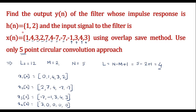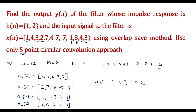Now we rewrite h[n] so that its length equals 5 by adding L-1 zeros. We have h[n] = {1, 2}, and since L equals 4 we add 3 zeros, giving h[n] = {1, 2, 0, 0, 0}. Now we perform 5-point circular convolution between each sub-block and h[n]: x1[n] with h[n], x2[n] with h[n], x3[n] with h[n], and x4[n] with h[n].